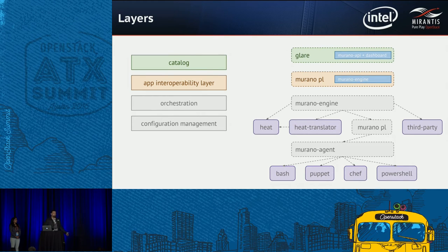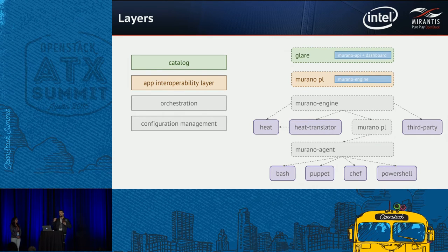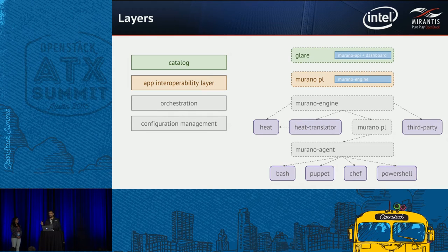You can integrate any third-party engine into Murano, like Cloudify — we did that in Mitaka. Configuration management in Murano is available only when you use Murano PL. It's available through the Murano agent — a small piece of software installed in your VM, either when spawning the VM or pre-built — which lets your application interact with the VM and send commands: execute this, give me results, do this, do that. Those commands can be Bash scripts, Puppet manifests, Chef cookbooks, or PowerShell for Windows configuration management.